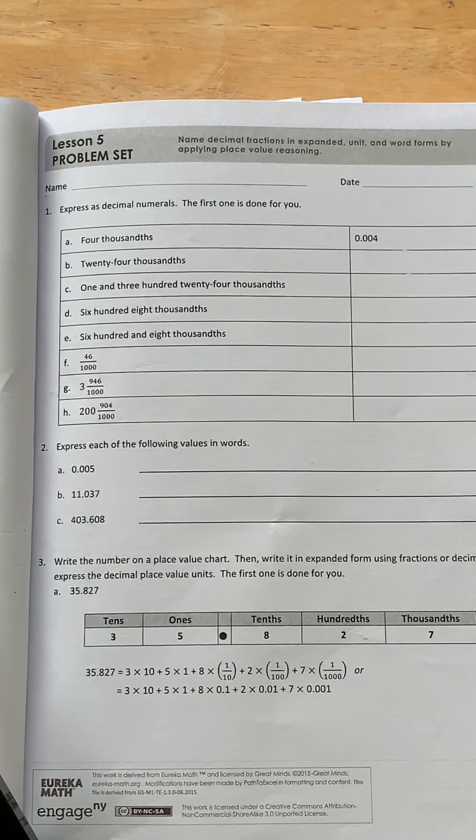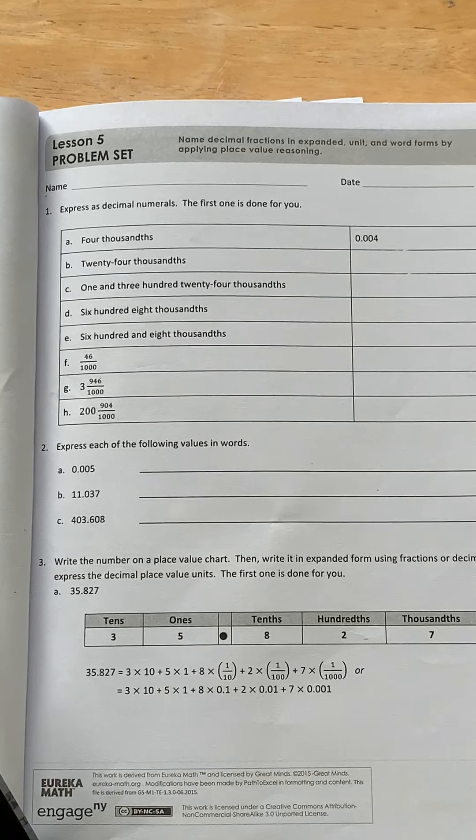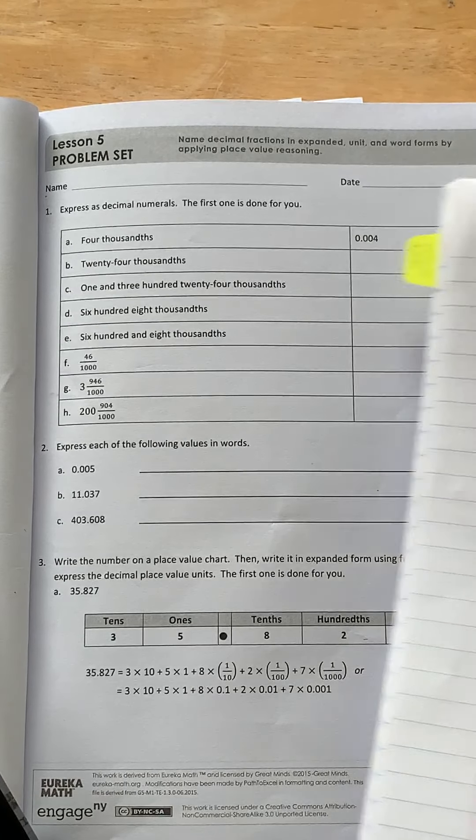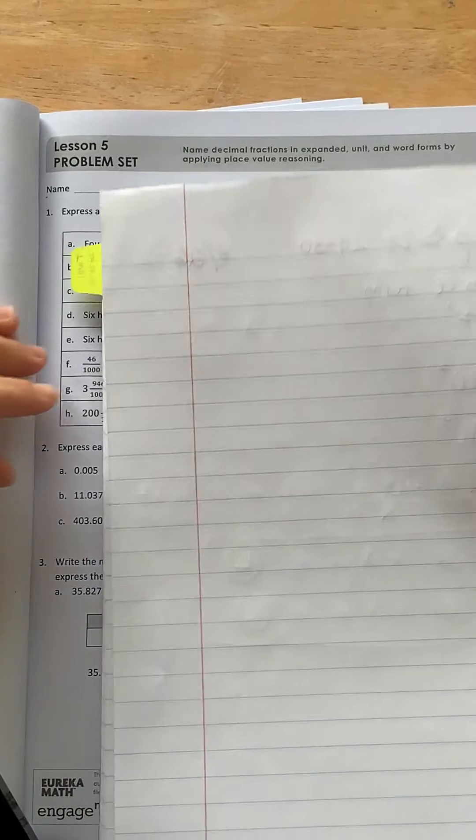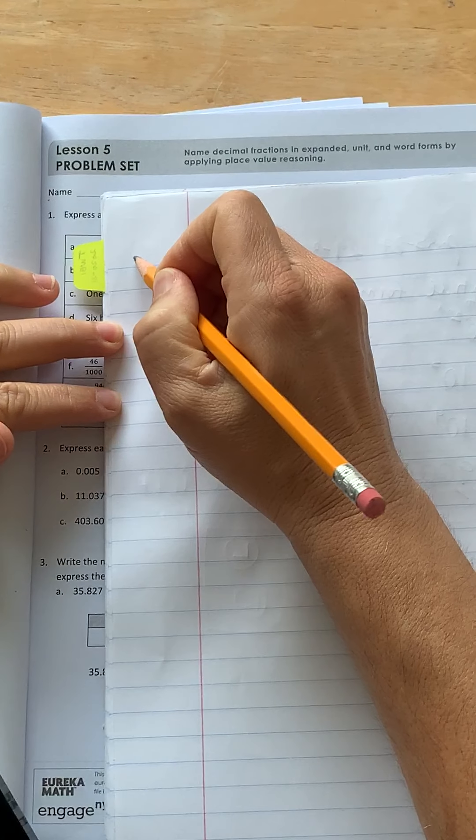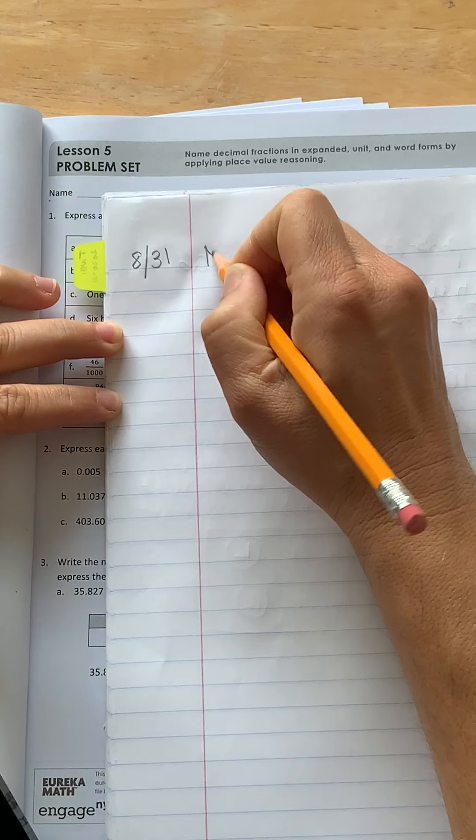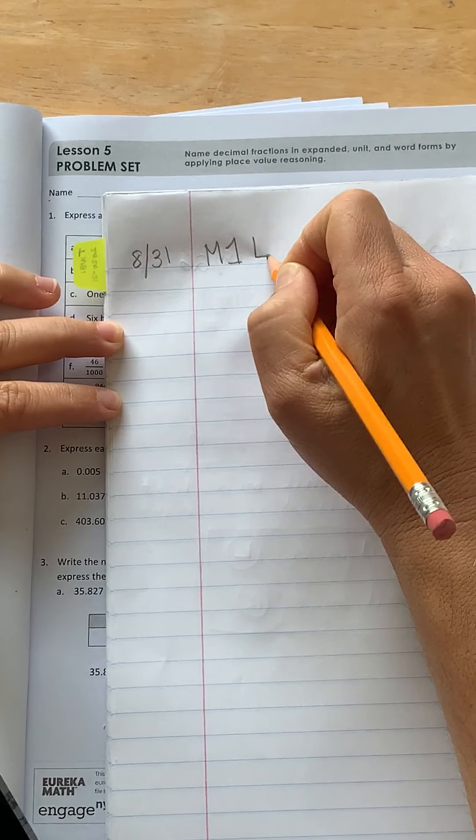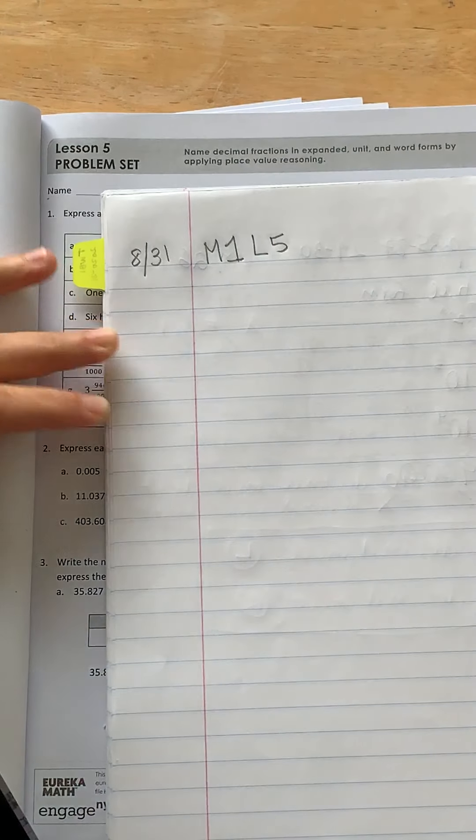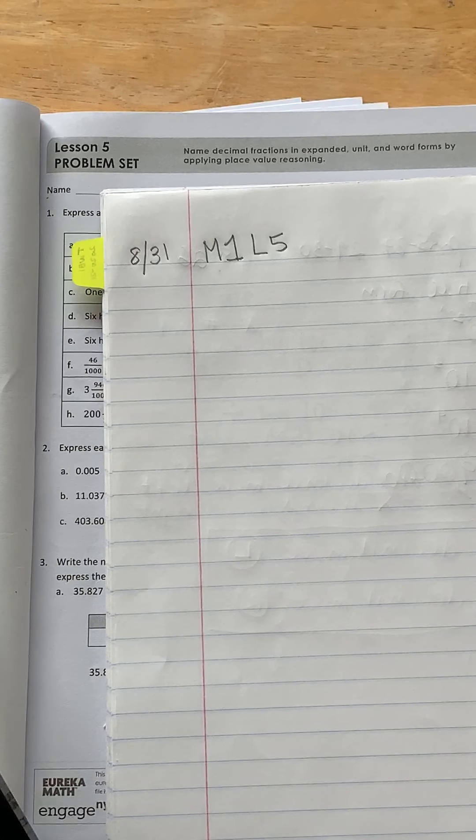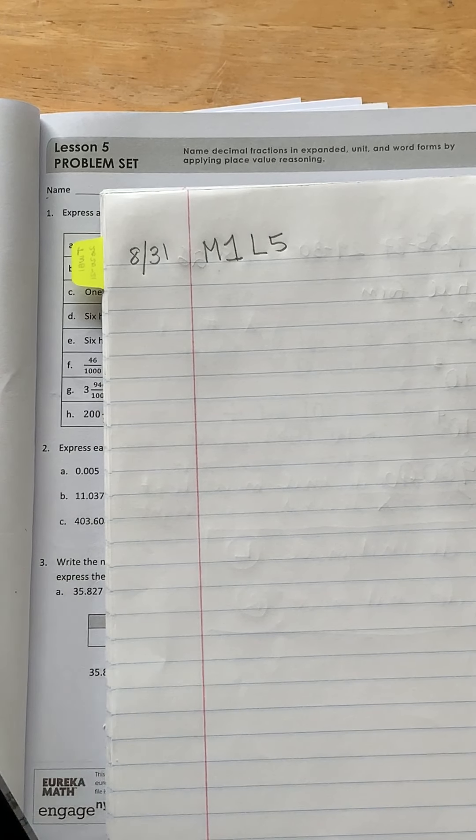Hello students, this is Ms. Moss and we are going to do our math lesson from Engage New York. Let's set up your notebook. So put the date as usual. And this is module 1, lesson 5. I know we skipped lesson 4. That's okay. We're not going to do every lesson in this workbook.